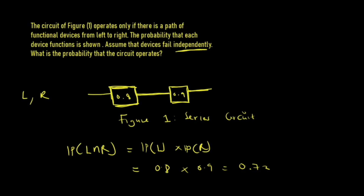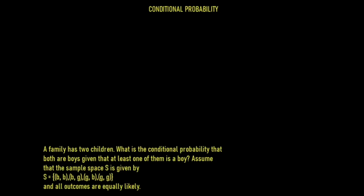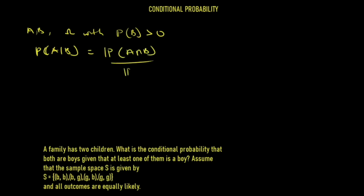Let's move on to conditional probability. Let A and B be two events in a sample space where the probability of B is greater than 0. The conditional probability of A given B is denoted P(A|B) and is expressed as the probability of A intersection B all over the probability of B.